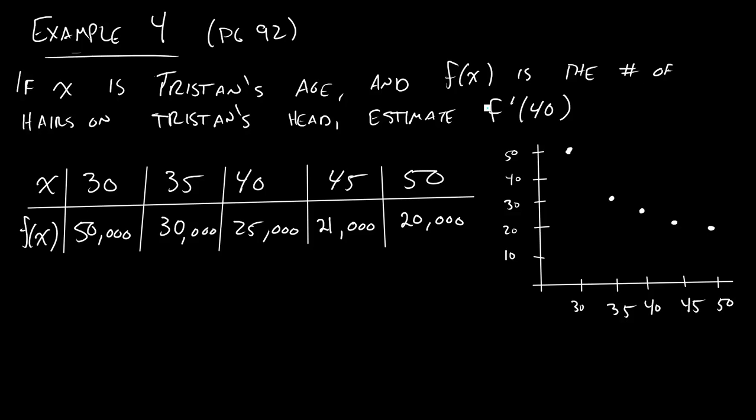So here's a problem where x is Tristan's age and f(x) is going to be the number of hairs on his head. When he's 30, this is actually about half a head of hair. You start with about 100,000 hairs on your head. And as he gets older and older, he has even less and less hair until he's down to about a fifth of what most people have. So the question here is estimate f'(40).